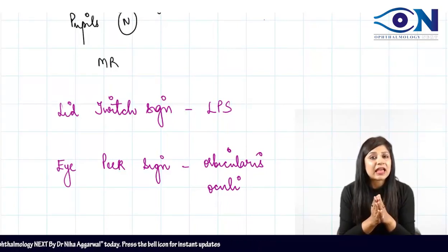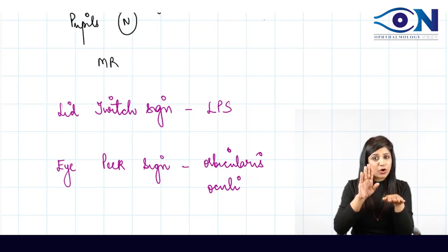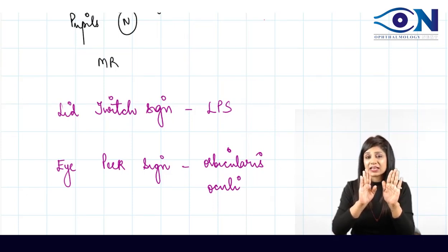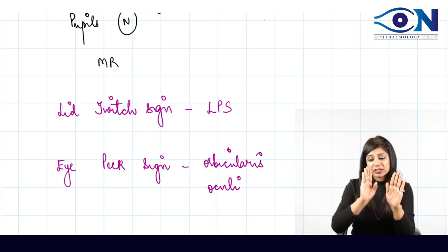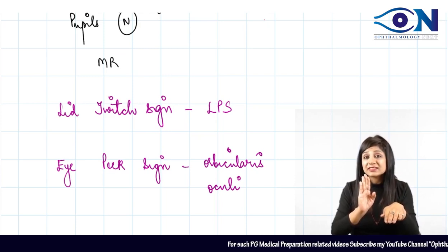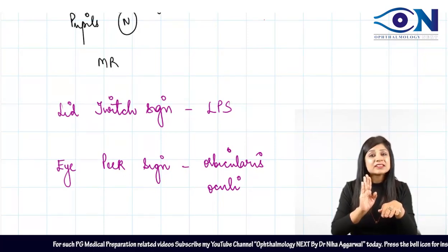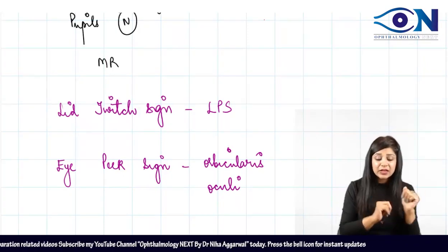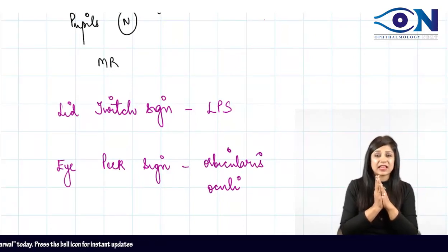In myasthenia gravis, there can be asymmetrical involvement. One side is normal and able to go up, but the other side affected by myasthenia gravis has easy fatigability. The normal side can maintain elevation, but as soon as that eye goes up, the affected side quickly comes down due to easy fatigability — this is the lid twitch sign.